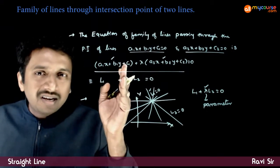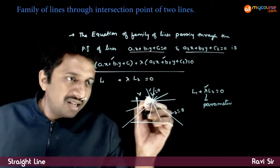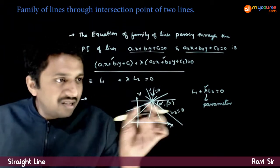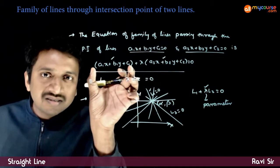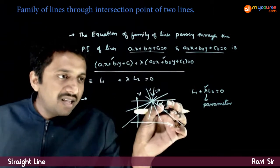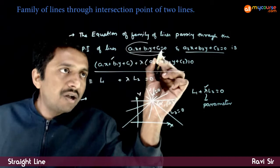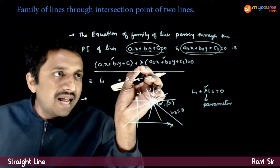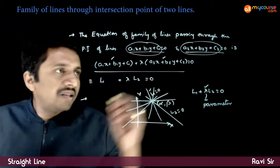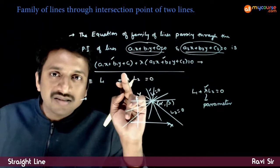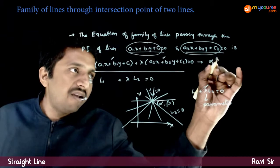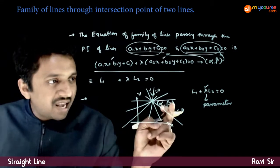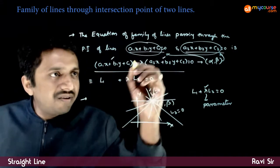It is very clear from this equation: if (α, β) is the point of intersection, this point satisfies both conditions. At (α, β), the first expression L1 = 0 and the second expression L2 = 0. So 0 + λ × 0 = 0 always. That means this equation is always satisfied by (α, β) — the point of intersection — for every value of λ.